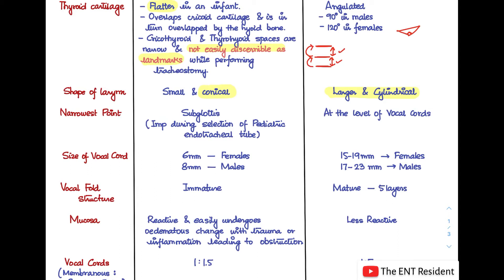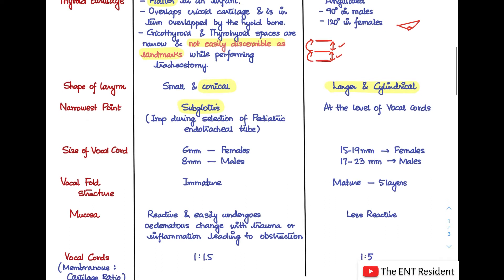An important point: the narrowest portion of the larynx is the subglottis in infants — this is very important when selecting a pediatric endotracheal tube. In adults, the narrowest level is at the vocal cords.